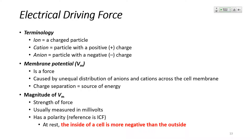Before we get into the electrical driving force, let's look at some terminology. When we speak about the electrical driving force, we're speaking about charged particles or ions. These can be one of two types: a cation is a particle with a positive charge, and an anion is a particle with a negative charge. We're going to look at how positive and negative charged particles exert a force on the membrane, in addition to the chemical force.